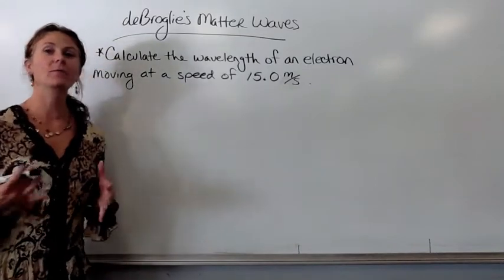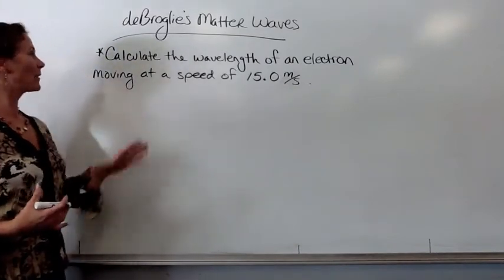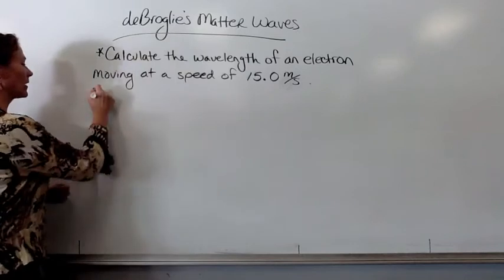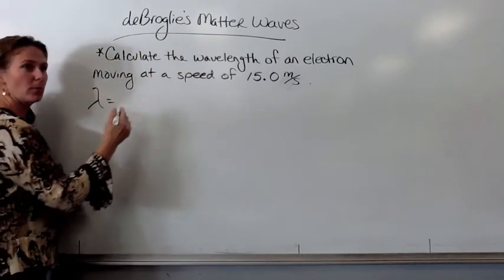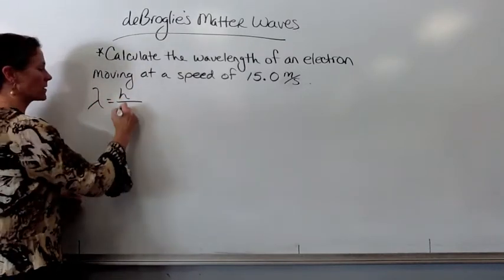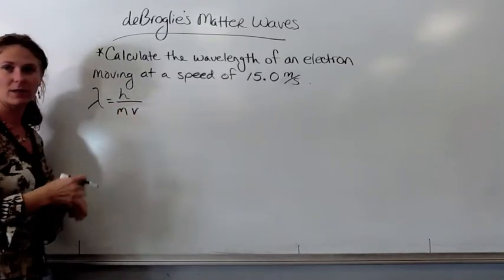Okay, if you were going to calculate a matter wave for a form of matter, de Broglie said that the wavelength of a form of matter is equal to Planck's constant divided by the mass of the object times the velocity of that object.